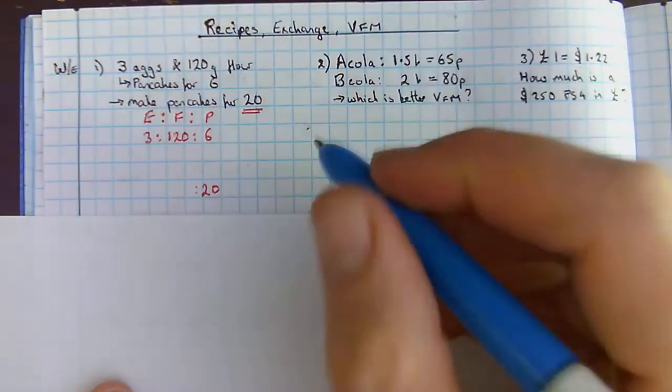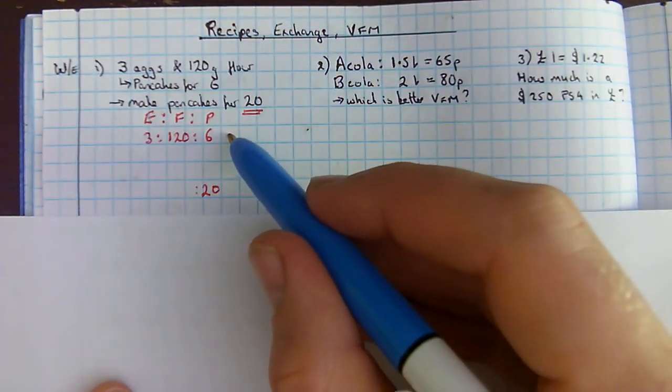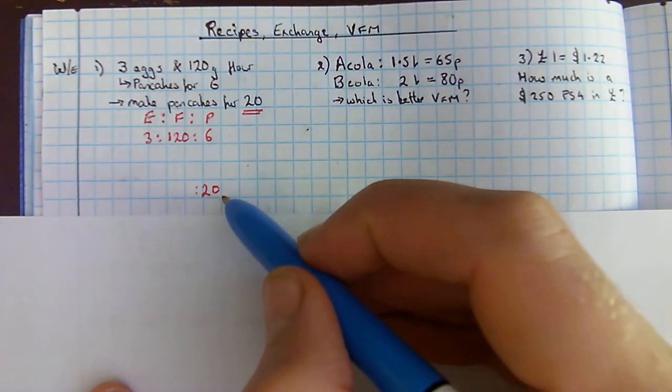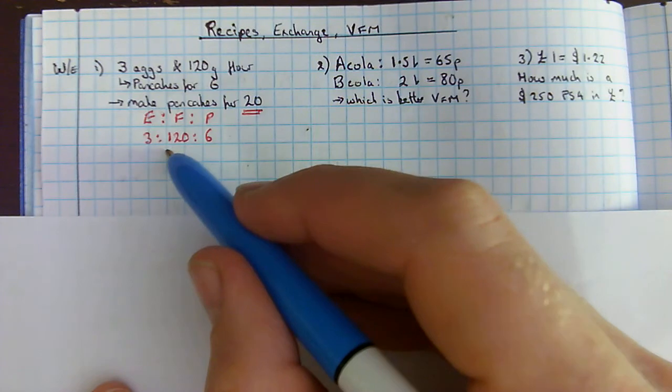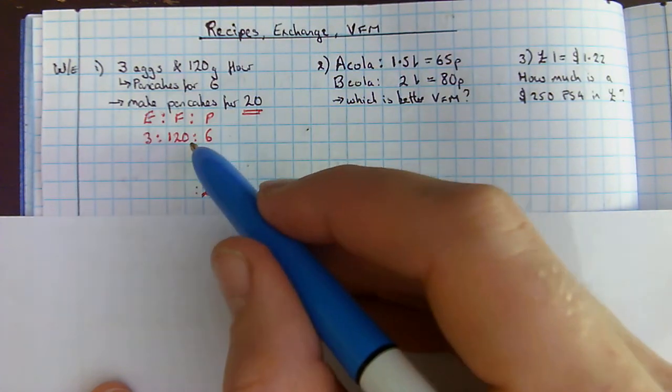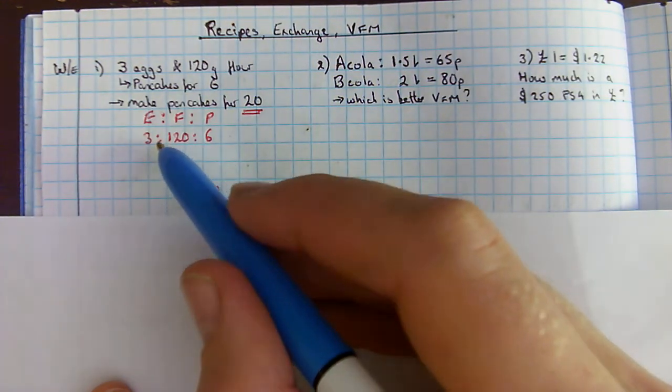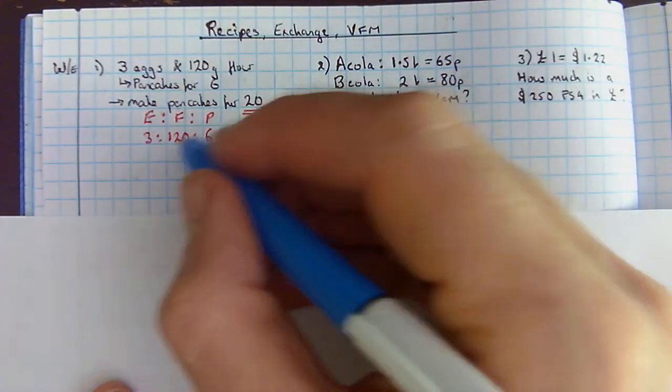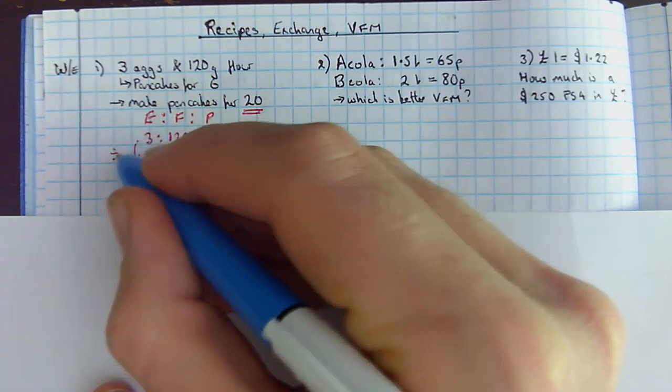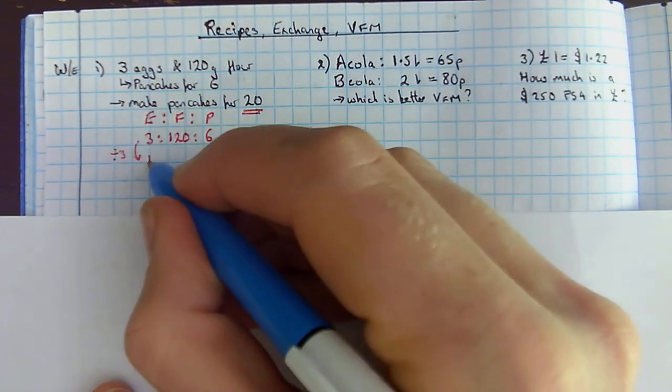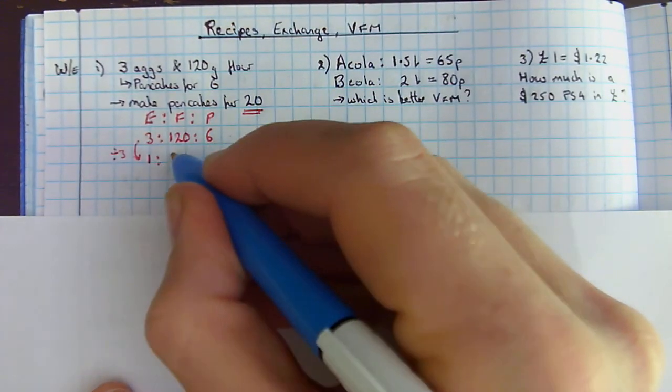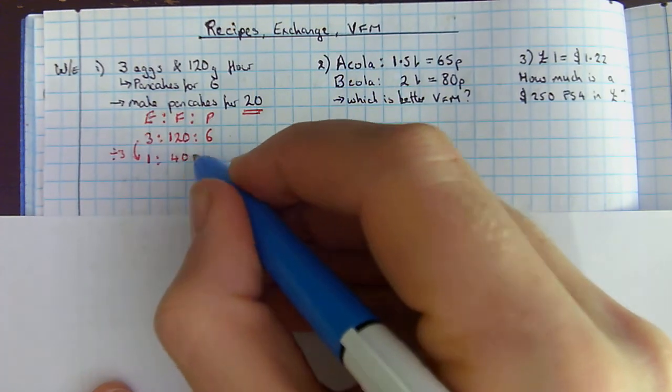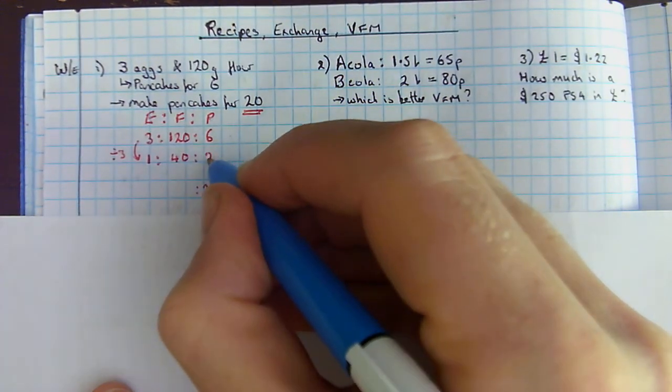Now, I've got a problem here. Six doesn't go into 20, so we're going to see, can I simplify my ratio? Well, yes, everything is divisible by three. So let's divide everything by three to simplify the ratio. So that means one, 40, and two.